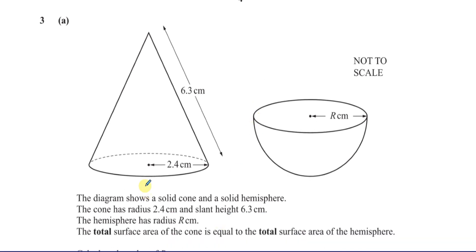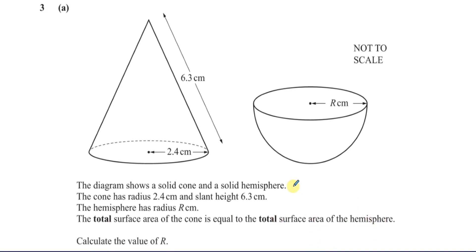Here we have a solid cone and a solid hemisphere. The cone has a radius of 2.4 cm and a slant height of 6.3 cm. The hemisphere has a radius of R cm. The total surface area of the cone is equal to the total surface area of the hemisphere. Calculate the value of R.